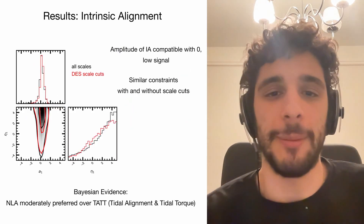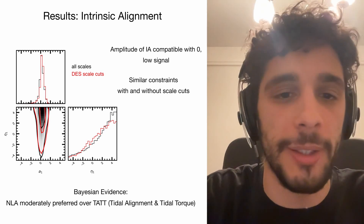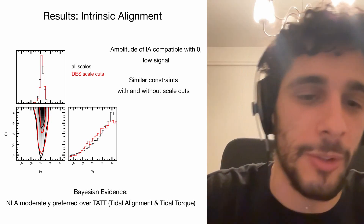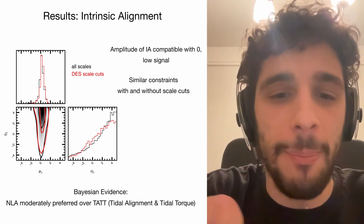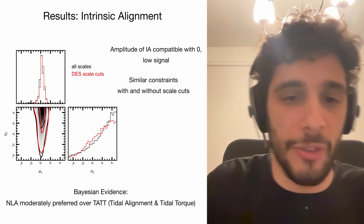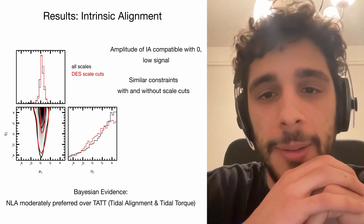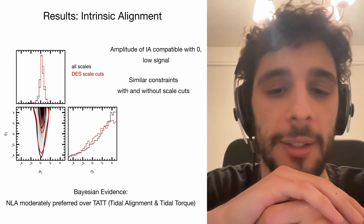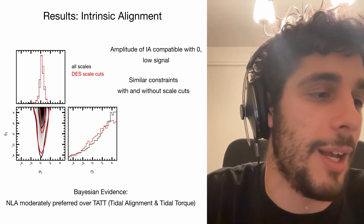We also constrain intrinsic alignment parameters. Using the fiducial non-linear linear alignment model with two free parameters — amplitude A1 and redshift dependence eta1 — the amplitude is quite low, compatible with zero, and this is not much impacted by whether we use scale cuts or not. We then tested the more general TATT model (Tidal Alignment and Tidal Torque, five free parameters, of which NLA is a special case).